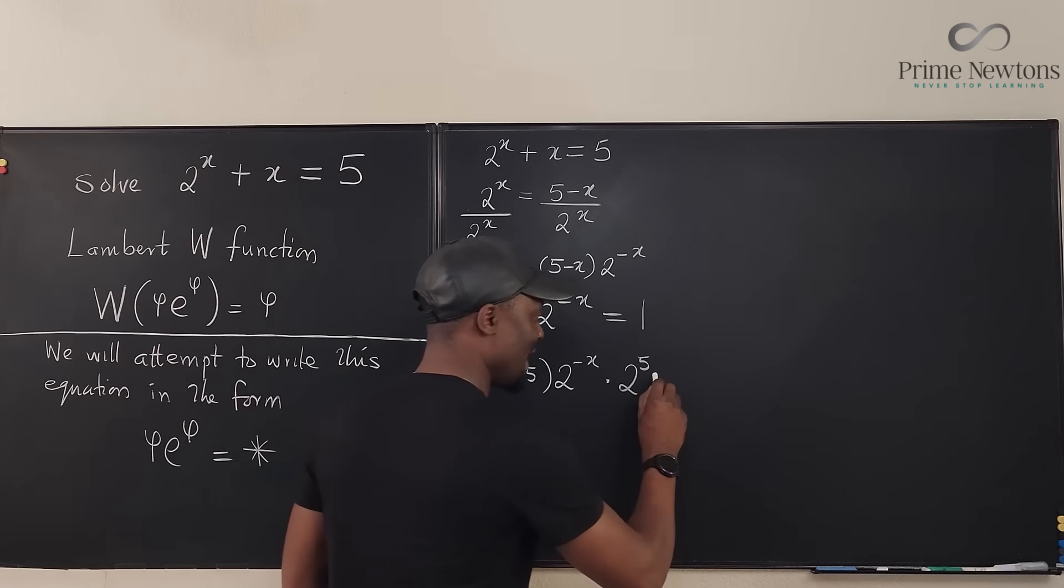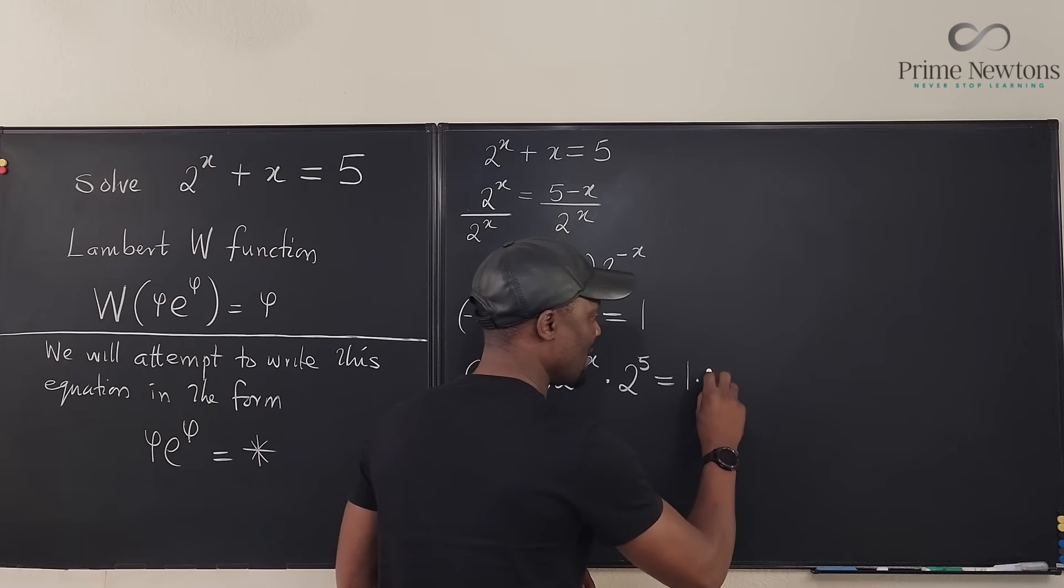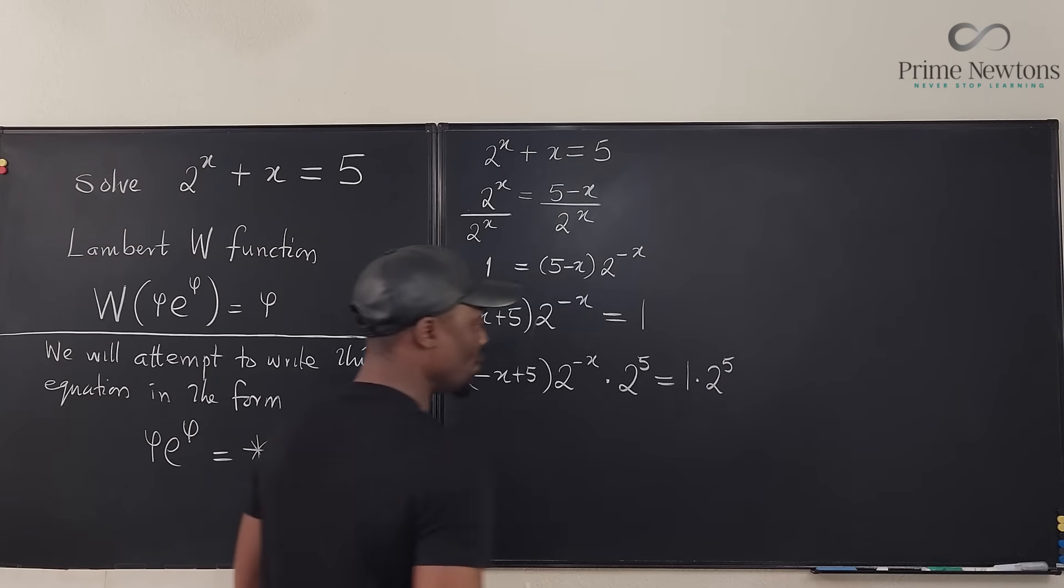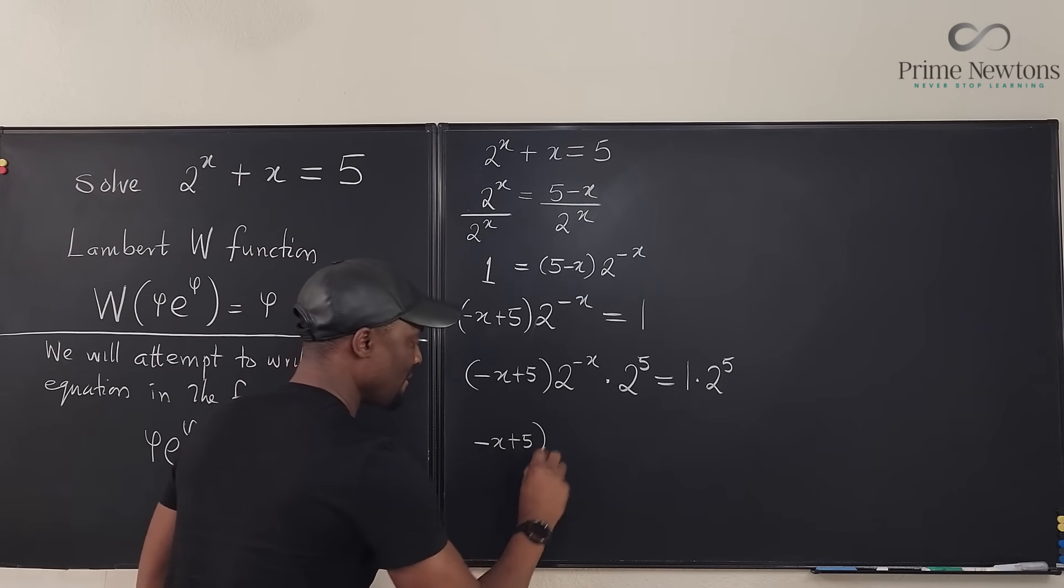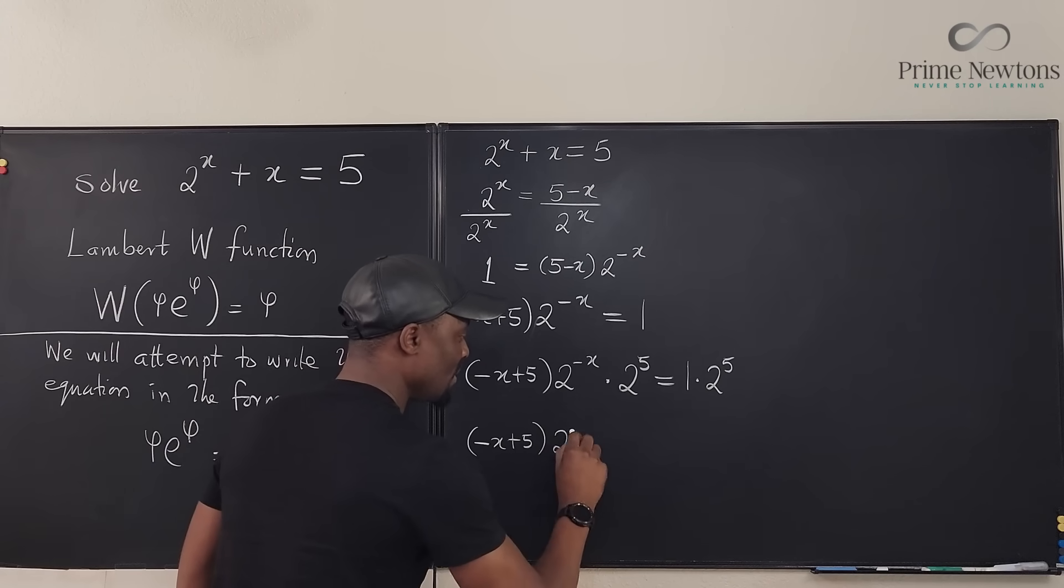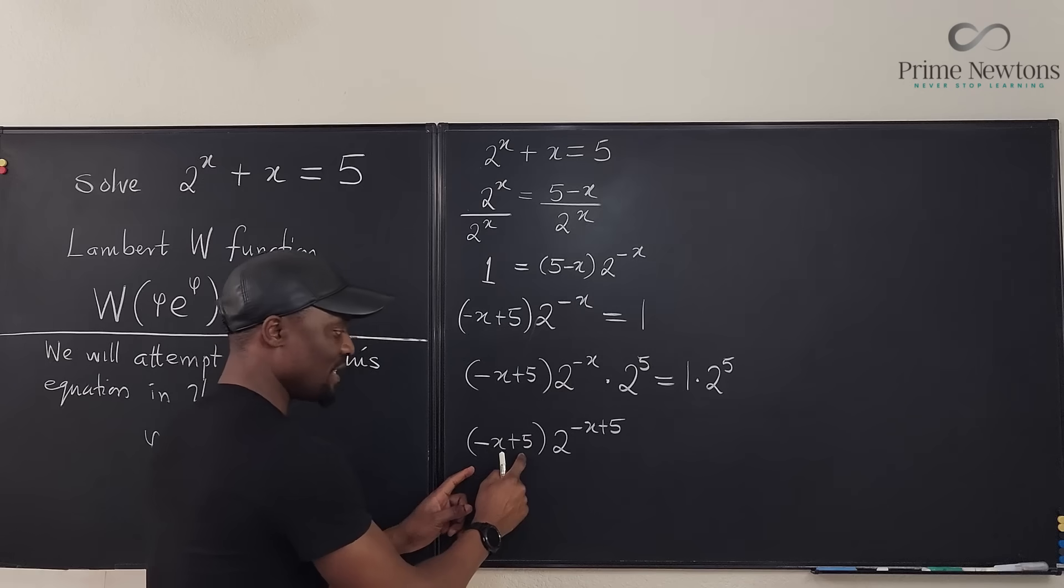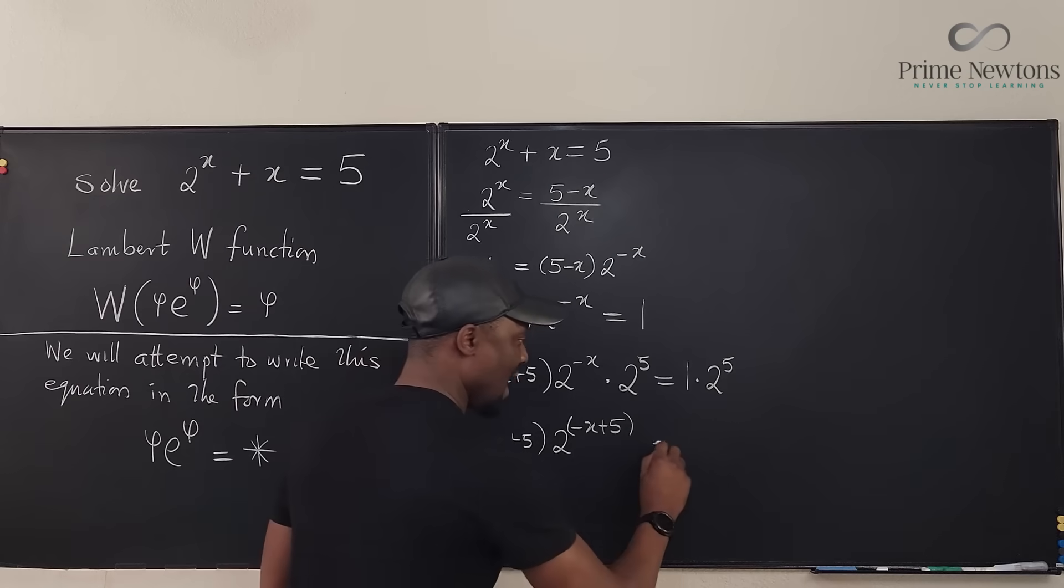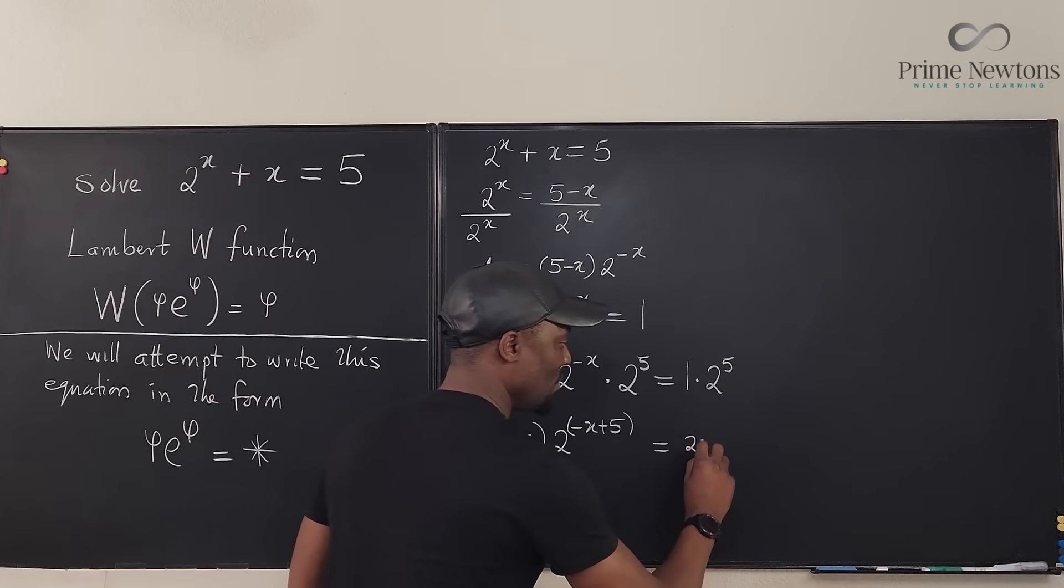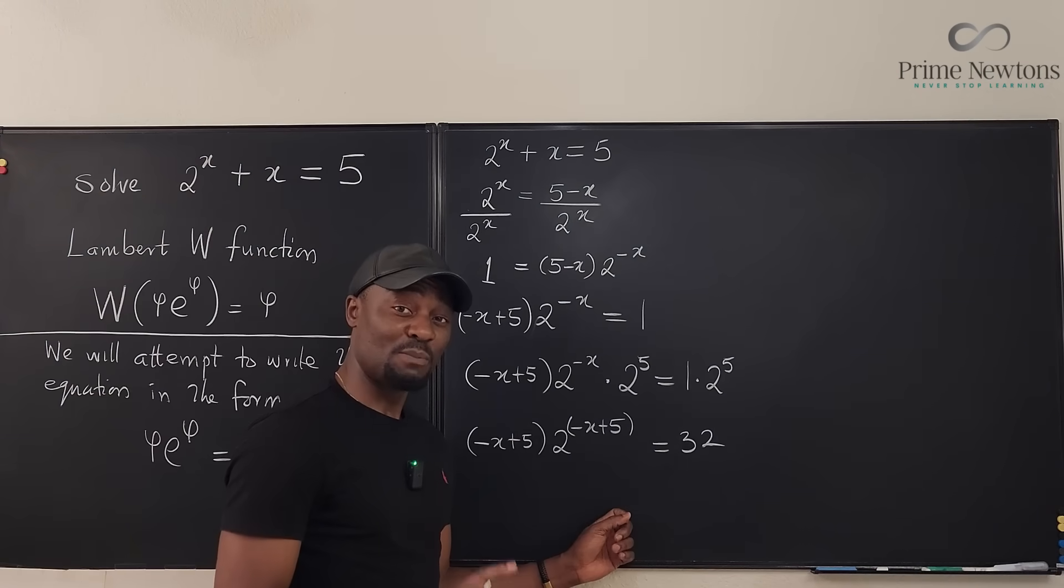2^(-x) multiplied by 2^5, because now when I put these two together, this is going to become plus 5, which looks like this. But whatever you do to the left, you also do to the right. So I'm going to multiply 1 by 2^5, which is 32. Watch this: I have (-x + 5) times 2^(-x + 5). What is here is now what is on top. And on the right-hand side, I have 32. At this point, we have a perfect recipe for the Lambert W function.